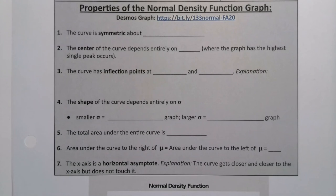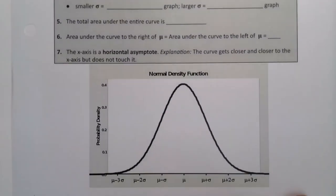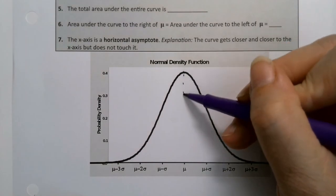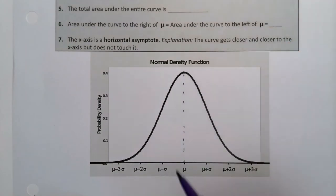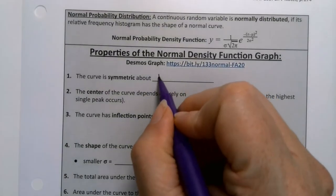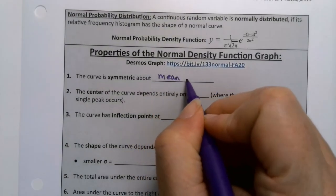The graph is symmetric, so that means that it's mirror-shaped around the center. And the center, of course, happens at μ. Mu is in the center, so it would be symmetric about the mean, μ.